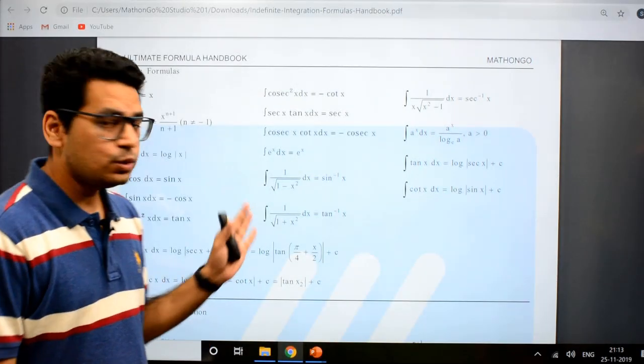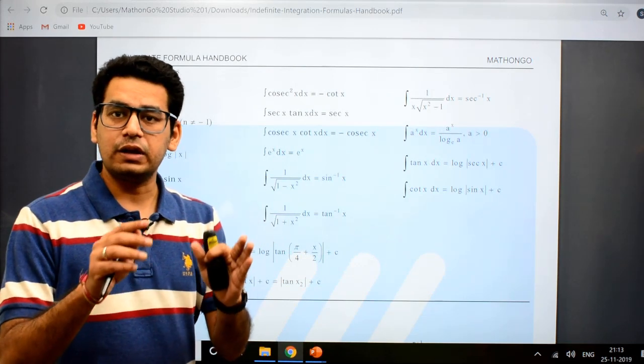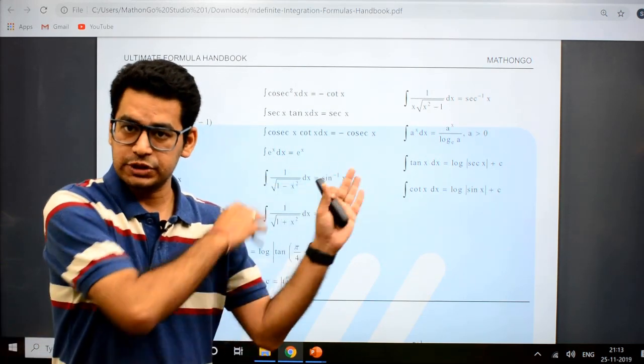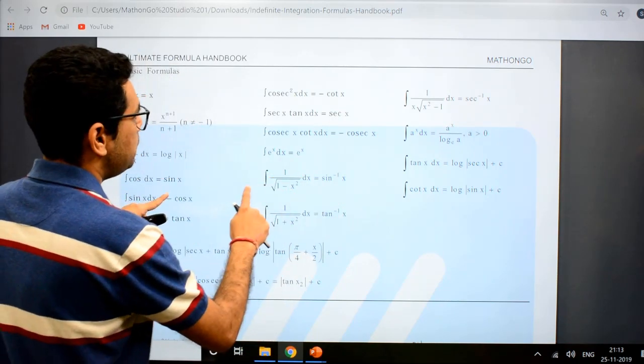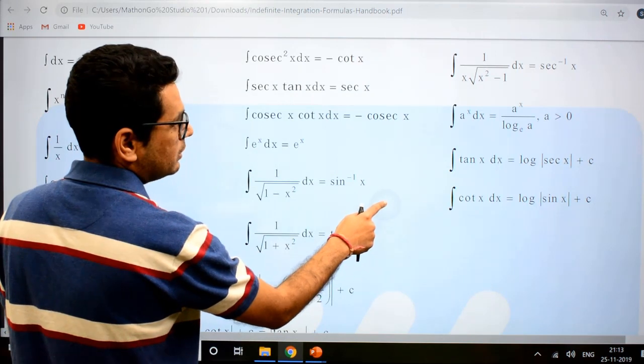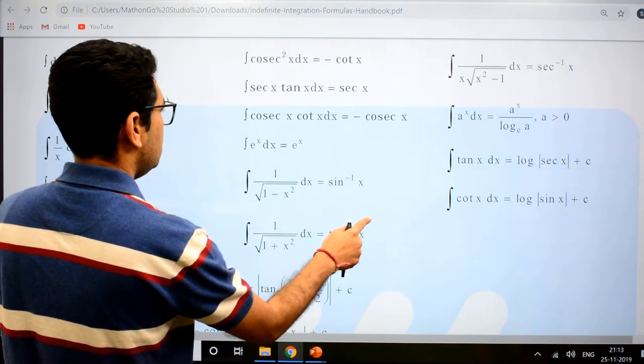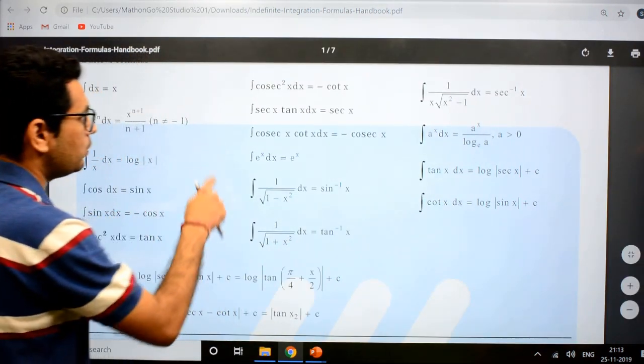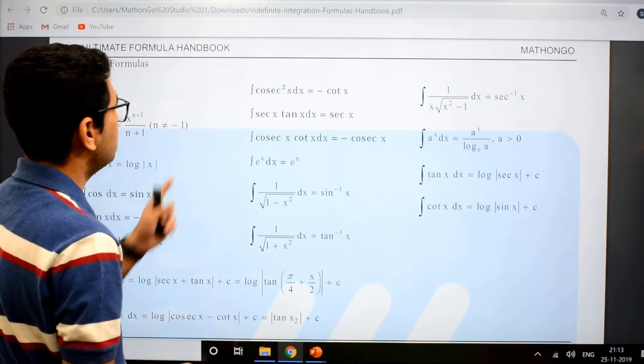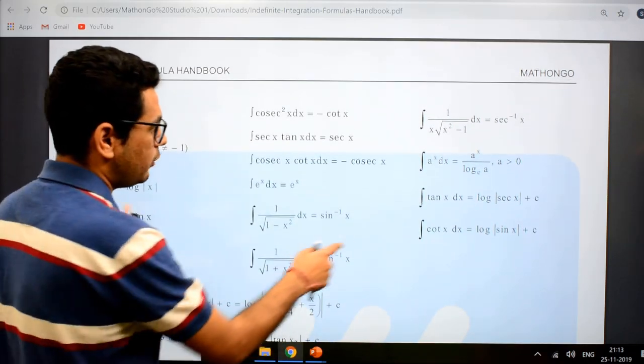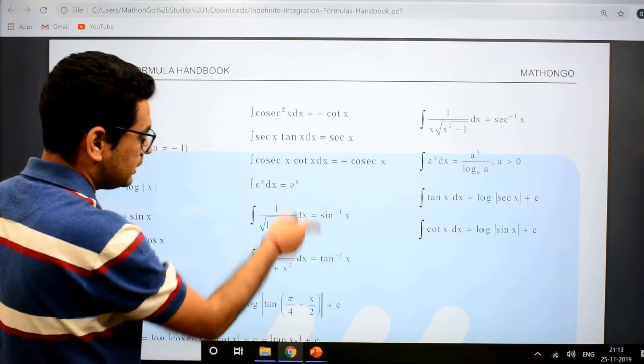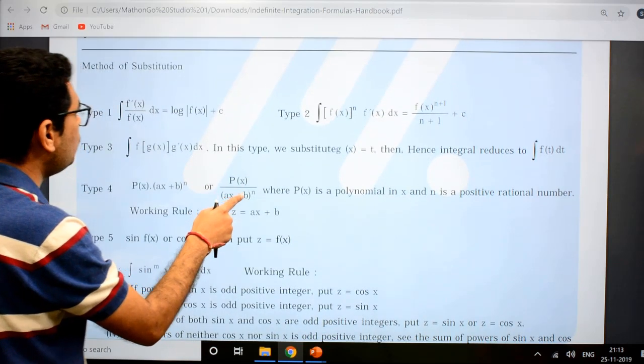Once you click on the link and it is downloaded, you can download it in the form of a PDF. This PDF is a handbook. If you notice, you'll get everything segregated. It starts with the very basic formulas, the basic ones that we do even in 10th. Then it will take you through every method.